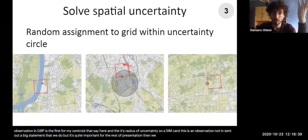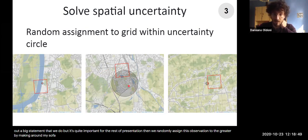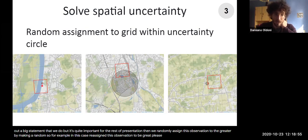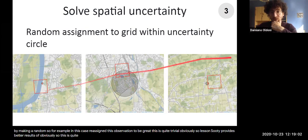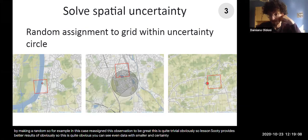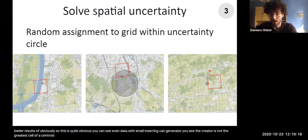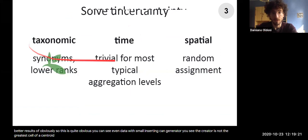Then we randomly assign this observation to the grid by making a random assignment. So for example, in this case, we assign this observation to this grid. This is quite trivial, obviously. So less uncertainty provides better results, obviously. So this is quite obvious. Here you can see even data with a smaller uncertainty that they can generate results that, as here you see, the grid is not the grid cell of a centroid. So this is kind of a compendium abstract about how we handle uncertainty.